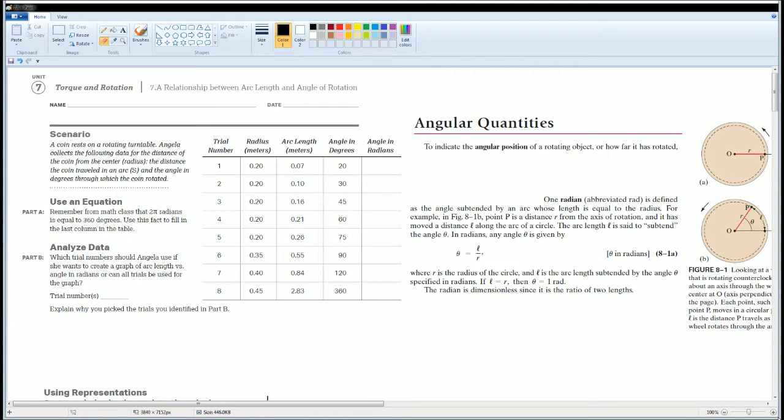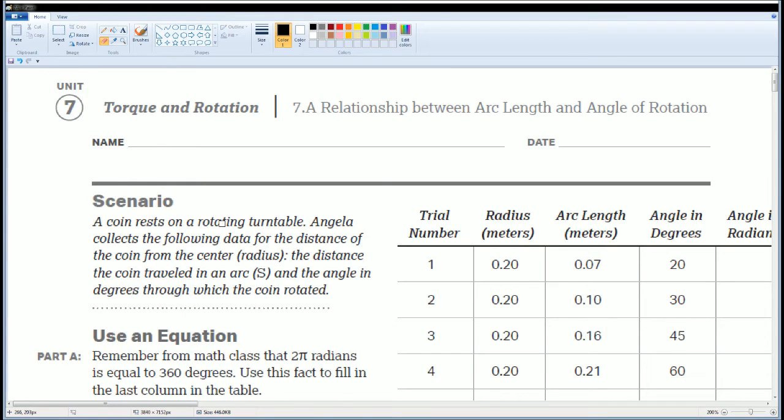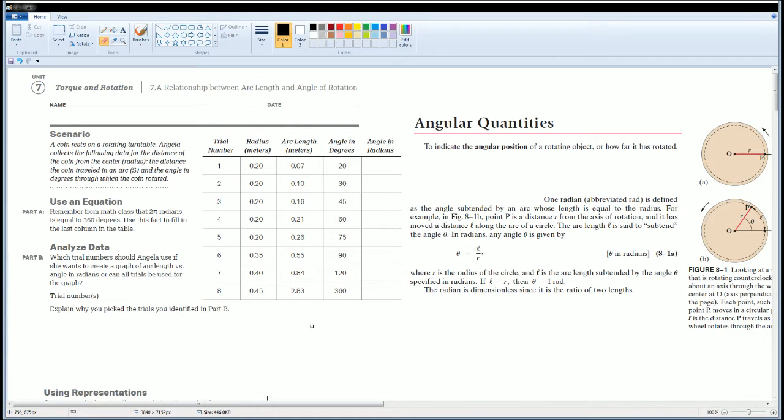Welcome to the AP Physics workbook solution. Here we have unit 7, torque and rotation, section 7.8, relationship between arc length and angle. You can read the scenario: a coin rests on a rotating turntable. Angelica collects data for the distance of the coin from the center (which is the radius), the distance the coin travels in an arc, and the angle in degrees through which the coin turns.